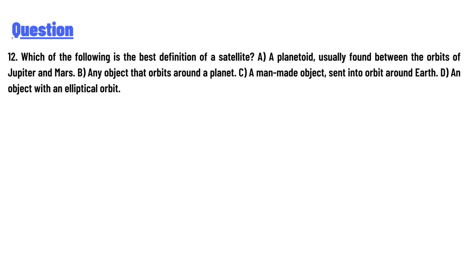The options are: A) a planet or body usually found between the orbit of Jupiter and Mars; B) any object that orbits around a planet; C) a man-made object sent into orbit around the earth; D) an object with an elliptical orbit.